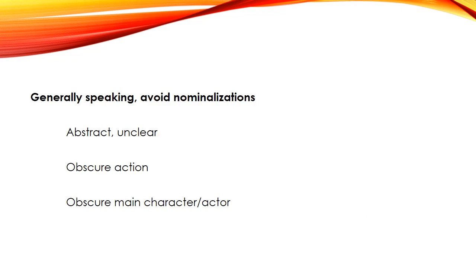Generally speaking, you want to avoid nominalizations in your writing when you can. They are abstract and unclear — abstract nouns are harder for readers to grasp. They also obscure the action, taking what's occurring and putting it into noun form. And they often obscure the main character or actor by becoming the subject of the sentence themselves. Nominalizations make it hard to keep your subjects aligned with characters and your verbs aligned with actions.